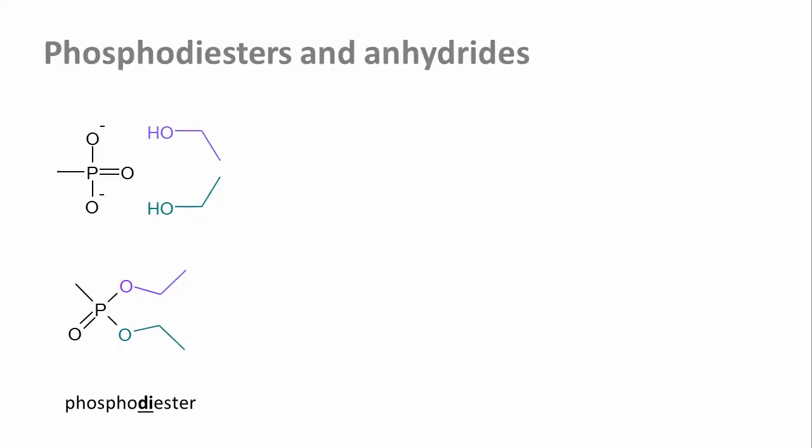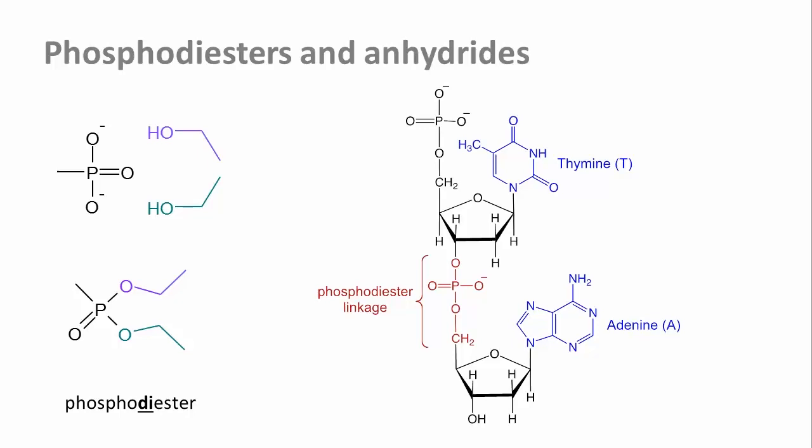Here, for example, in a short dinucleotide, a phosphodiester linkage connects the two deoxyribose units.